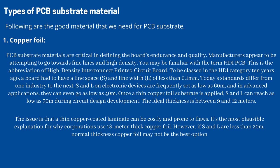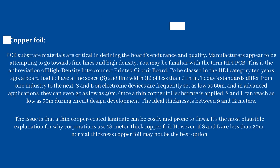Today's standards differ from one industry to the next. S and L on electronic devices are frequently set as low as 60 µm, and in advanced applications they can go as low as 40 µm. Once a thin copper foil substrate is applied, S and L can reach as low as 30 µm during circuit design development. The ideal thickness is between 9 and 12 µm. A thin copper-coated laminate can be costly and prone to flaws, which is why corporations typically use 18 µm thick copper foil. However, if S and L are less than 20 µm, normal thickness copper foil may not be the best option.